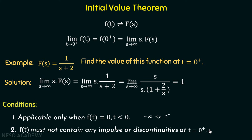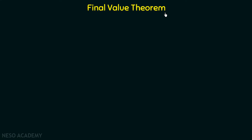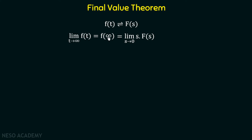We will now move on to the final value theorem. It is the property of Laplace transform by which we can find the final value of a function in the s domain. If f(t) has Laplace transform F(s), then the final value is: limit t tending to infinity of f(t), equal to f(infinity), equal to limit s tending to 0 of s times F(s). When t tends to infinity in the time domain, s tends to 0 in the s domain; both represent the final value of the same function.